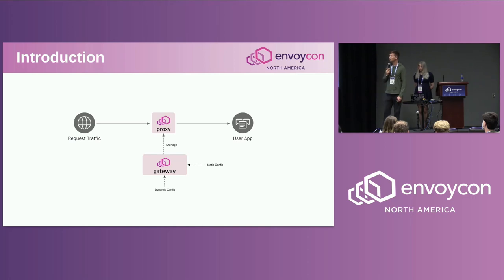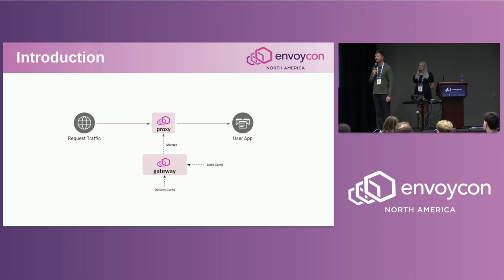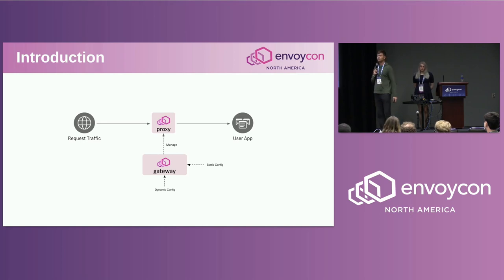Looking at Envoy Gateway itself: it consumes configuration, both static and dynamic. The static configuration is used to start up Envoy Gateway, and the dynamic configuration is used to configure its runtime. That dynamic configuration is expressed through Gateway API resources. It then manages a fleet of Envoy proxies.